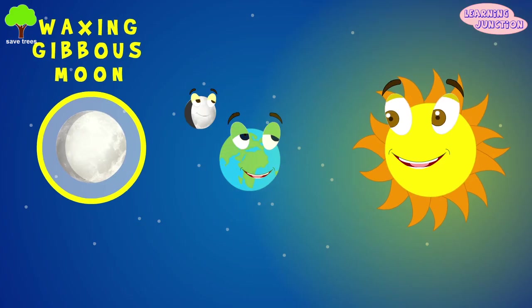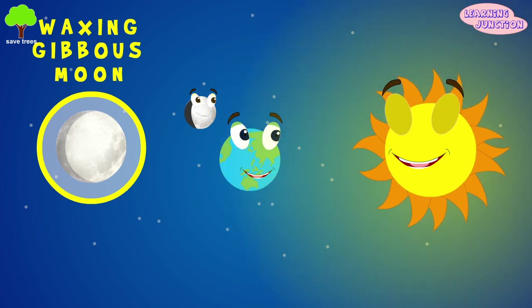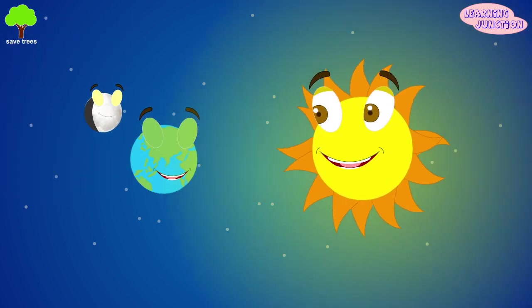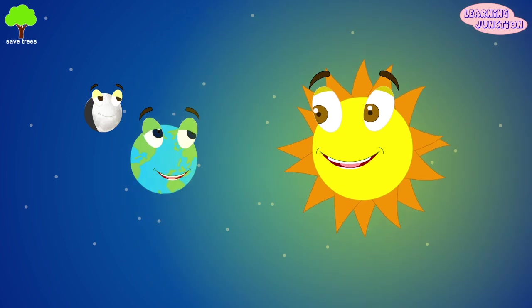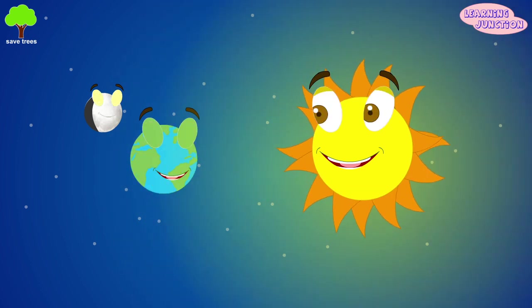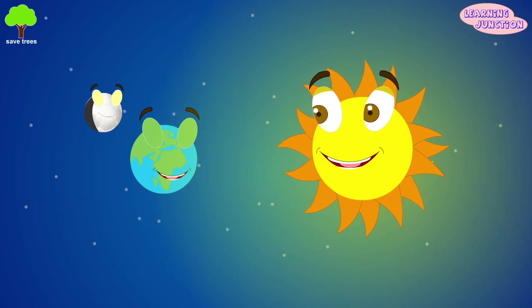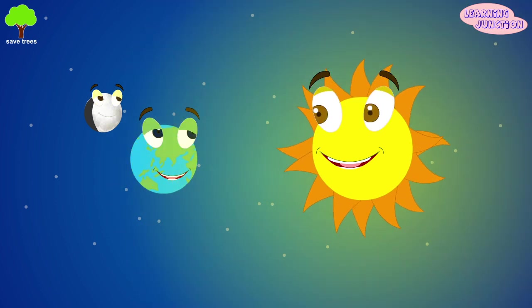Waxing gibbous moon. A gibbous moon is a very bright and shiny moon. A waxing gibbous moon rises in the east during the afternoon, passes due south in the evening, and sets in the west just before dawn.